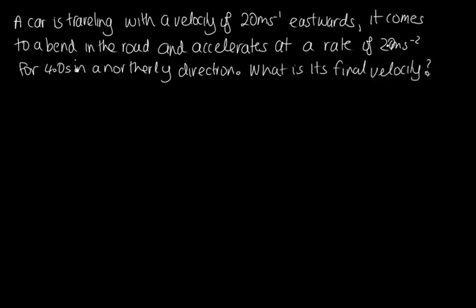So to answer this question, we're going to need to make use of the first kinematic equation, that the velocity equals the initial velocity plus the acceleration times time. But we're also going to need to make use of our vector representations, because one of these is eastwards and the others in a northerly direction. So we're going to need to represent everything by vectors and use the head to tail method to add these vectors together.